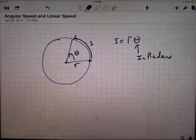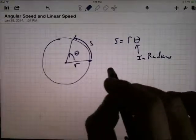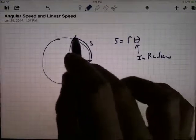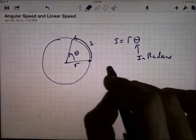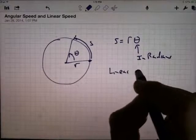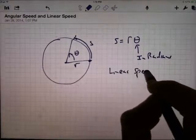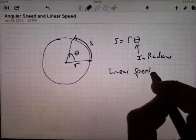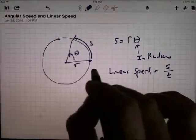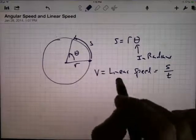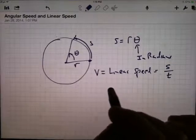So if we start talking about speed, if you talk about the linear speed of this thing as it's moving around, linear speed, that's distance divided by time, so that's arc length divided by time. The book uses the letter V to talk about the linear speed, like velocity.